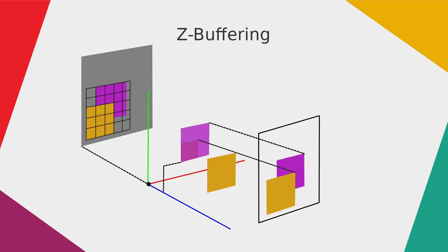The next algorithm is z-buffering. Z-buffering is used to check which object is covering another object and which object shall be drawn to the screen. In this example we have two cubes — one orange and one purple — and from our camera view the orange one covers part of the purple one. The algorithm checks which object is closer to the camera on the local z-axis. The orange cube has position 2 on the z-axis and the purple cube has position 1, so the orange cube is closer. For every pixel the camera checks which of the potentially visible objects is closest and renders that one, covering any objects behind it.